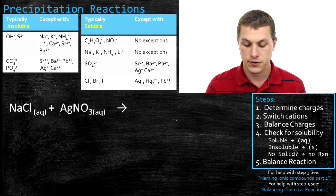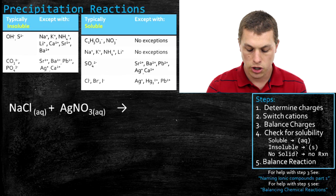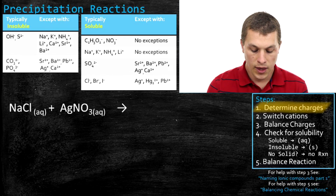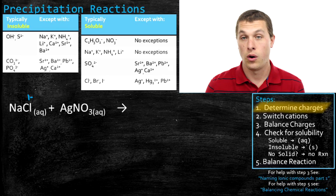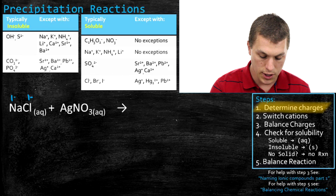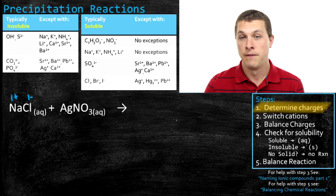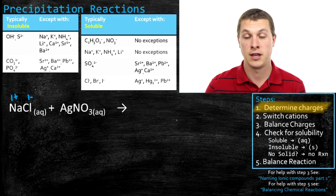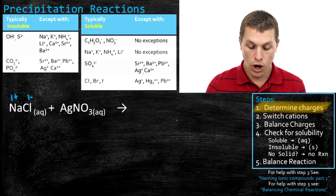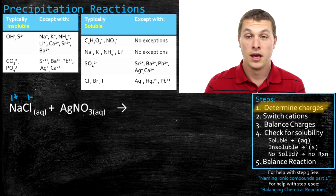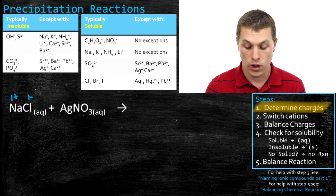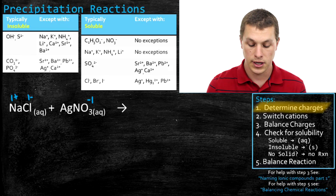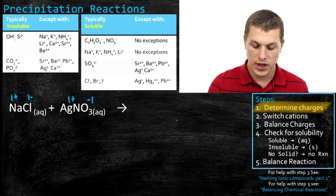I've broken this process down into five steps. The very first step is to determine the charges on all of our ions. We'll start with sodium chloride: chlorine is always negative one, and sodium is always plus one. If you're not sure how, check out my video on predicting the charges of ions — we can use the periodic table and their position on it. Over here, we have silver nitrate. Nitrate has a charge of negative one — you have to know that. And that means silver is plus one.